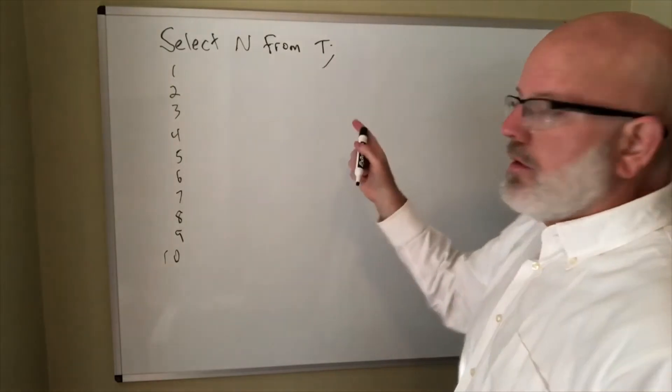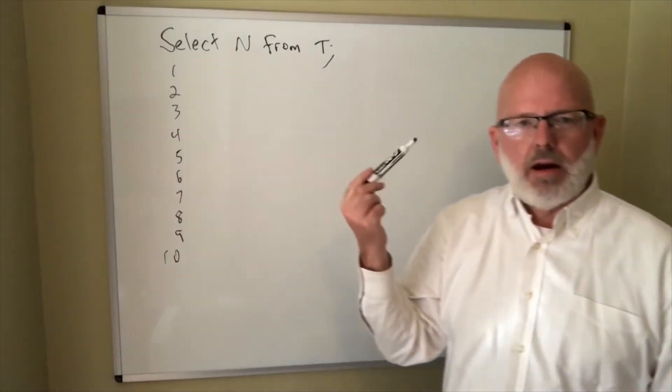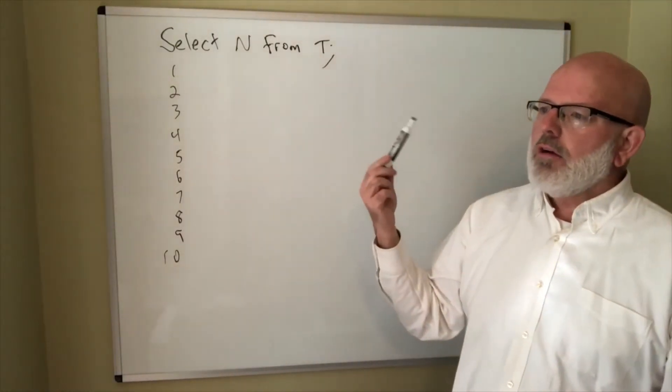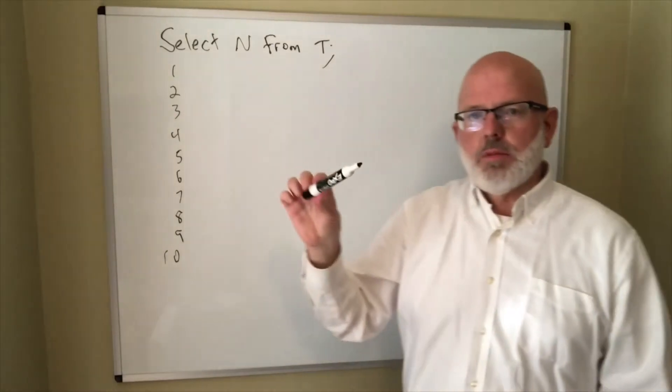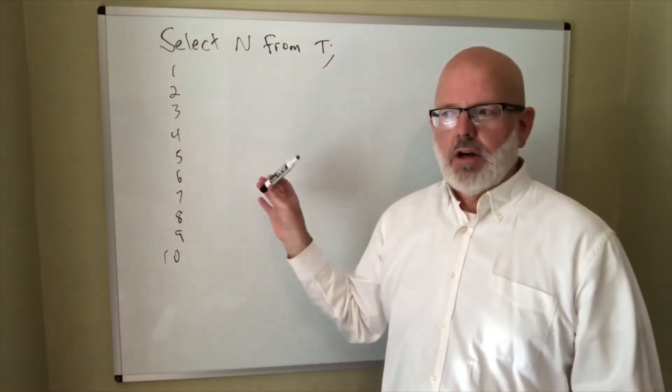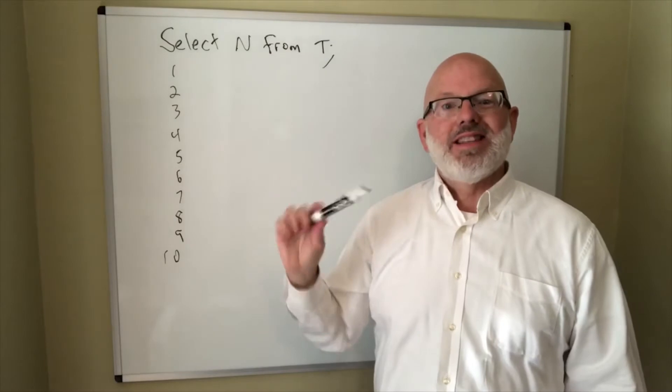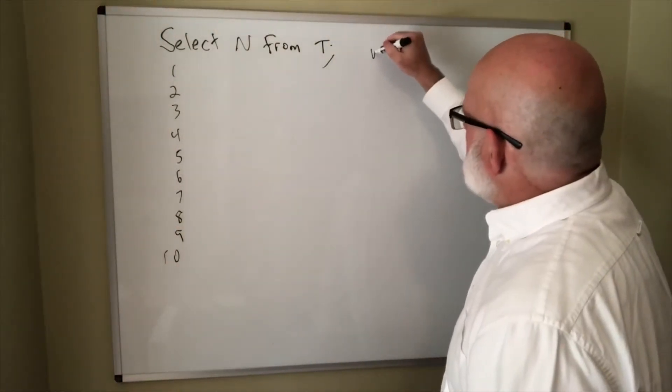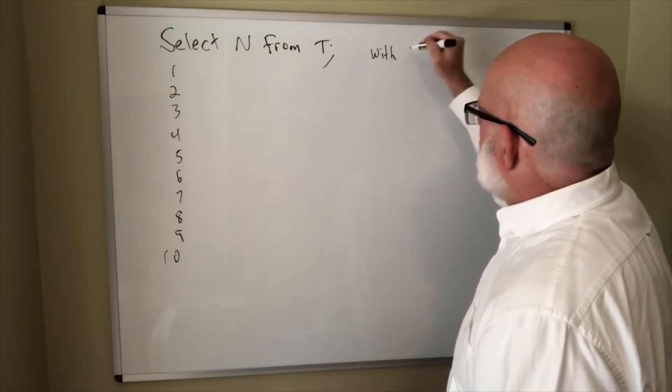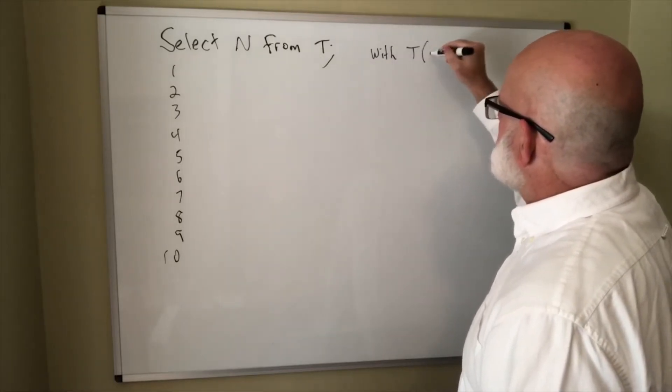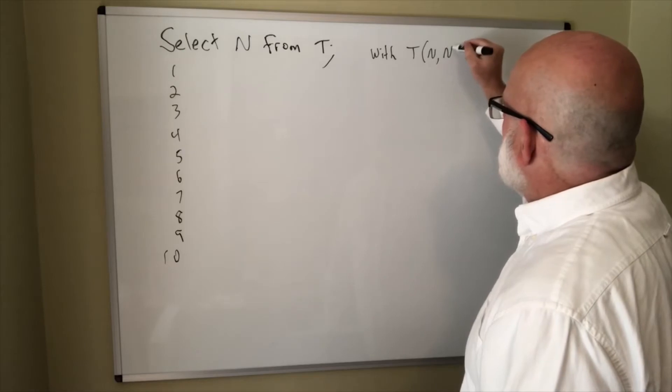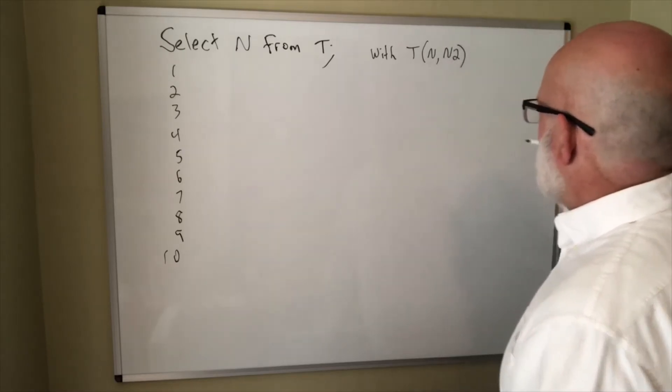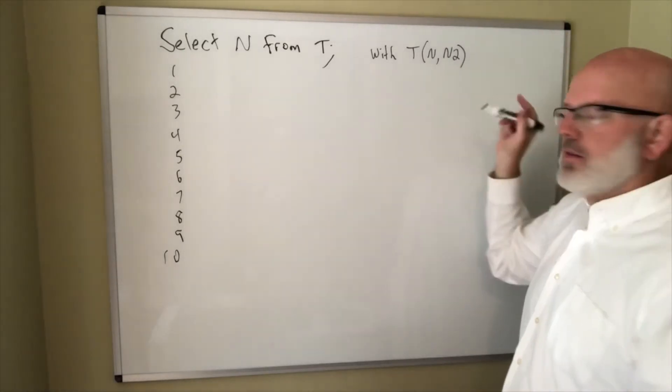When using recursive SQL, the way to think about it is you want to have two columns. Your first column is your current value of the variable and the second column is the next value.